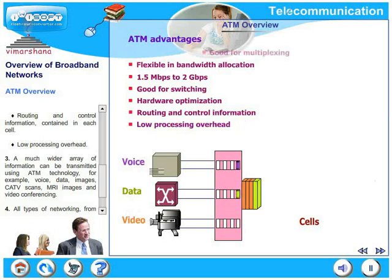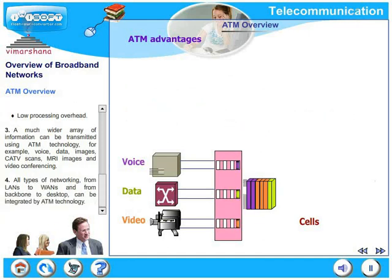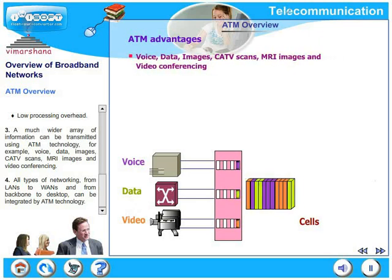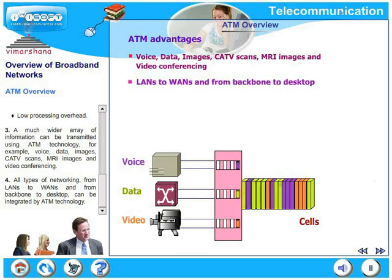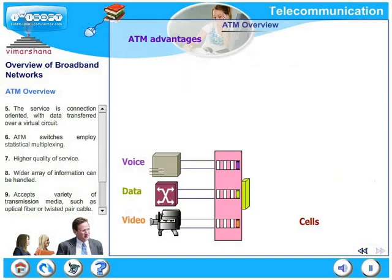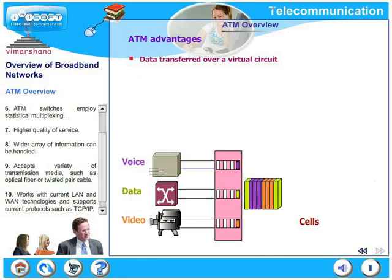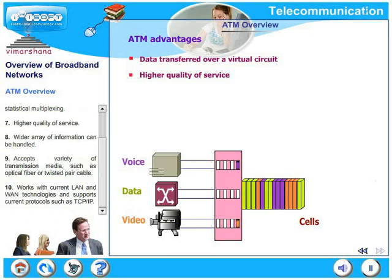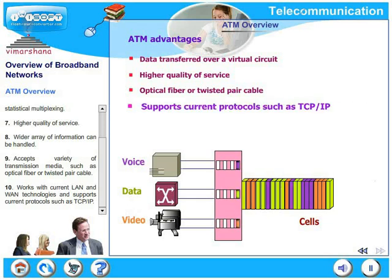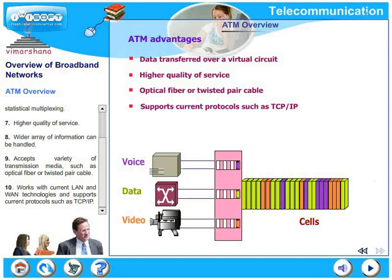We will see each of these in detail as we go along. A much wider array of information can be transmitted using ATM technology — for example, voice, data, images, CATV scans, MRI images and video conferencing. All types of networking from LANs to WANs and from backbone to desktop can be integrated by ATM technology. This service is connection oriented with data transferred over a virtual circuit. ATM switches employ statistical multiplexing. ATM has a higher quality of service. A wider array of information can be handled by ATM. ATM accepts a variety of transmission media such as optical fiber or twisted pair cable. ATM works with current LAN and WAN technologies and supports current protocols such as TCP/IP.